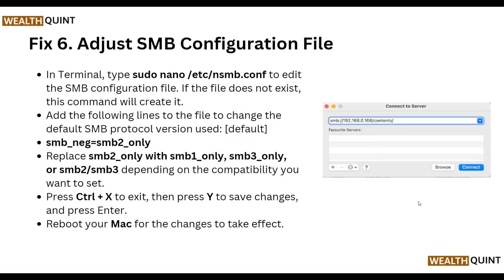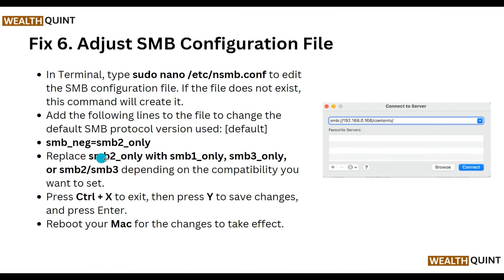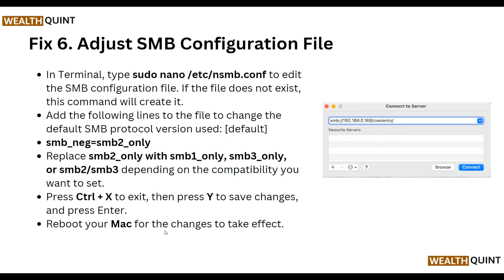Our sixth step is to adjust SMB configuration files. In Terminal, type `sudo nano /etc/nsmb.conf` to edit the SMB configuration file — if the file does not exist, this command will create it. Add the following line to change the default SMB protocol version: `[default]` then `smb_neg=smb2_only` (or `smb1_only` or `smb3_only` depending on the compatibility you want to set). Press Ctrl+X to exit, then press Y to save changes, and press Enter.